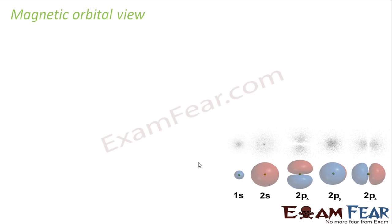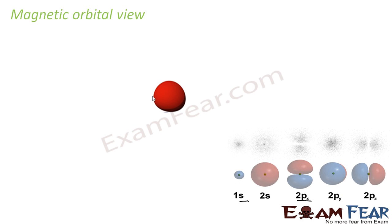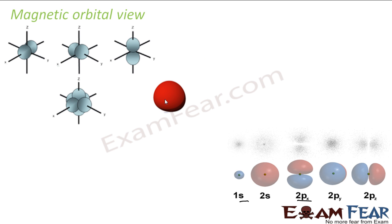If we talk about the orbitals, we have s orbitals — only one type, because it is spherical. We have p orbitals — three types: px, py, and pz. This combined view of all three is how p orbitals look.